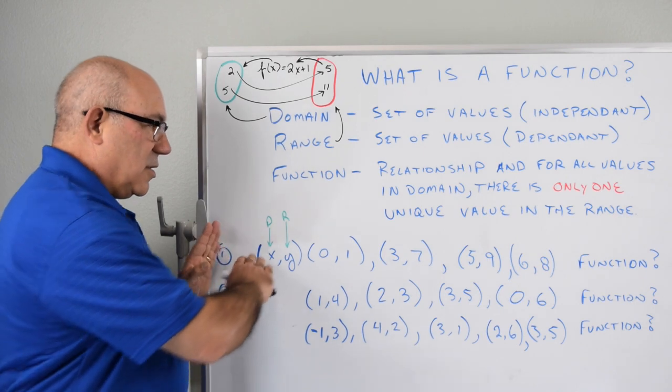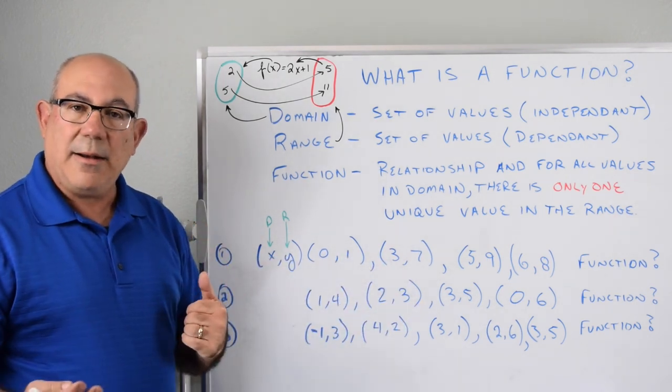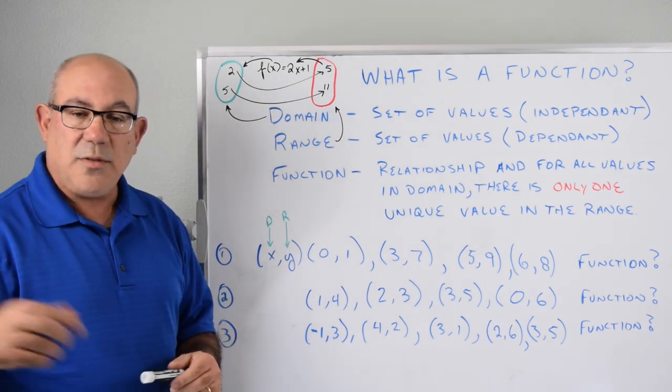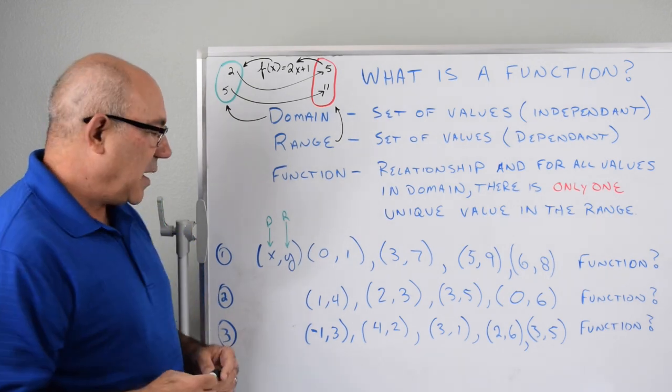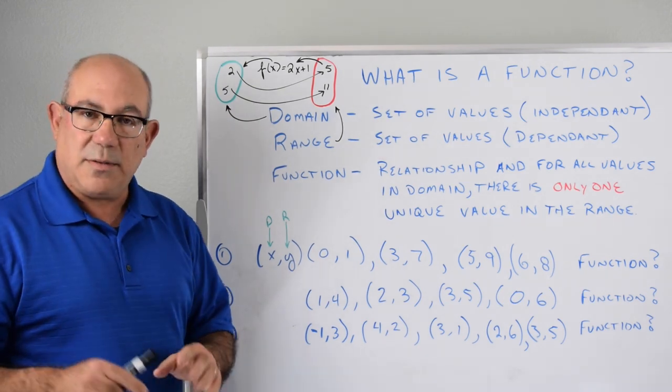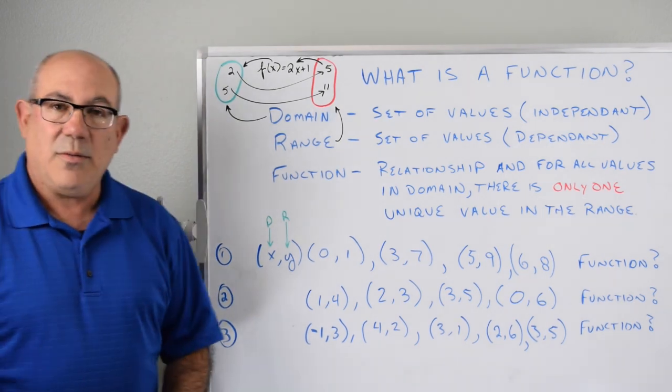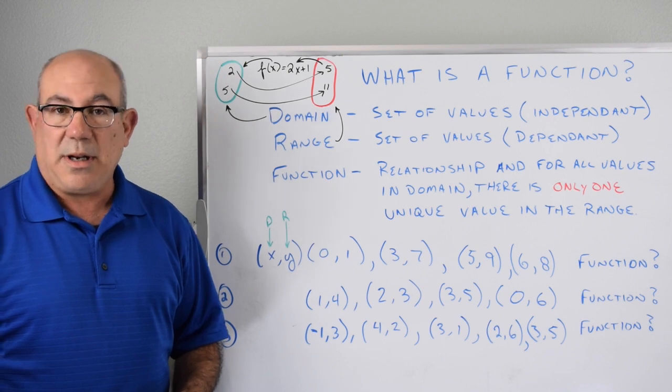So what we're going to do is look at these three sets of points and we're going to determine whether or not it's a function. And then we're going to do some graphs and use the vertical line test to see if it's a function too. So this would be a good place to just pause the video and take a shot at trying to answer whether these are functions or not. And when you come back, you can see an explanation.